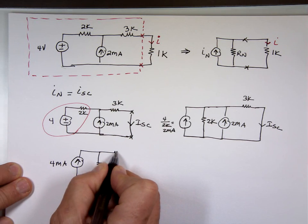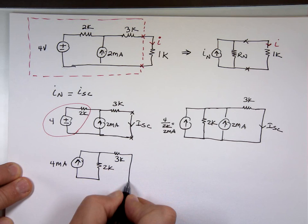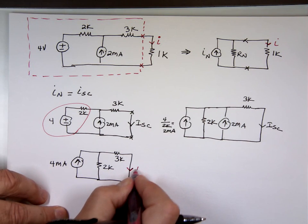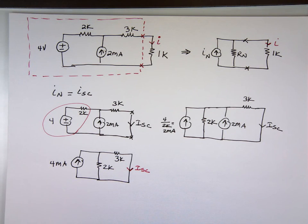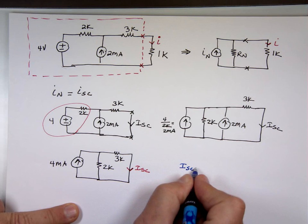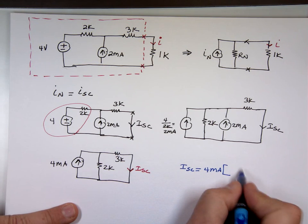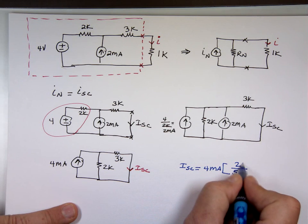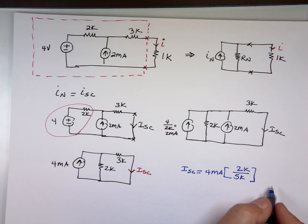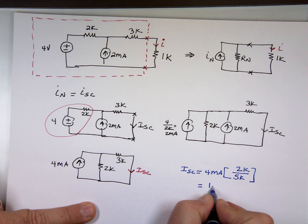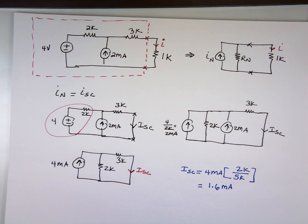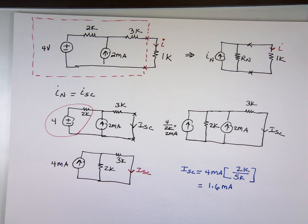Now I have a 4 milliamp source in parallel with a 2k and a 3k resistor, and I'm looking for I short circuit using current division. I short circuit equals 4 milliamp times 2k over the sum (2k + 3k). That gives 4 times 2 divided by 5, which is 1.6 milliamp. So we found I short circuit equals 1.6 milliamp.